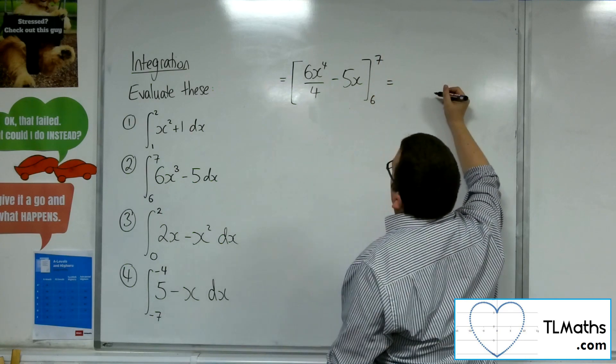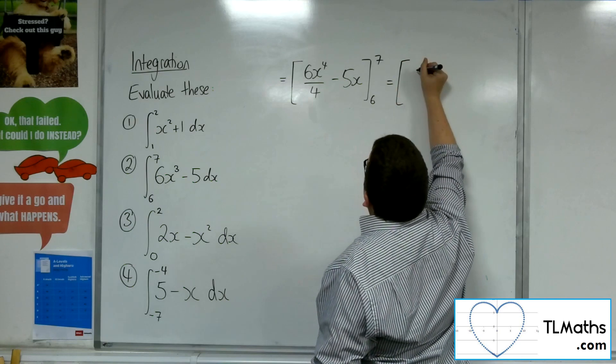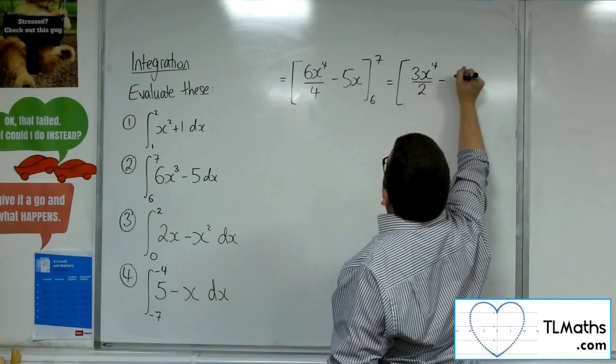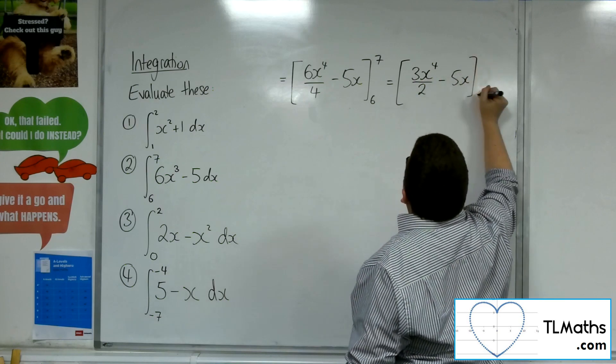Now I don't like leaving 6 quarters unsimplified, so I'm going to rewrite that as 3 halves. So 3x to the 4 over 2, take away 5x, evaluated between the 6 and the 7.